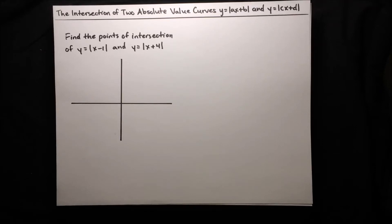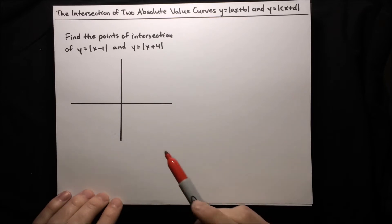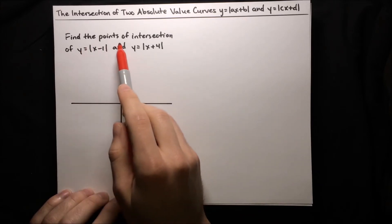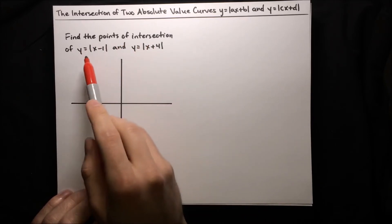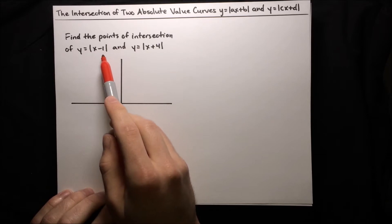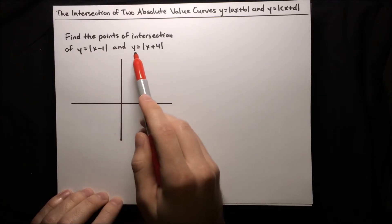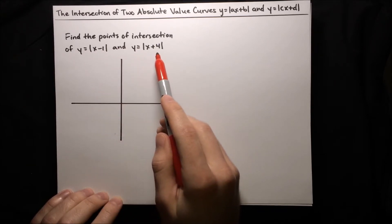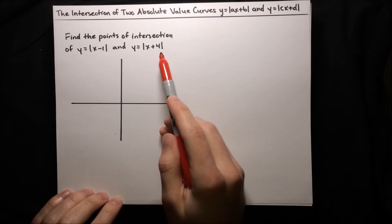In this video, I'm going to show you how to find the intersection of two absolute value curves. In particular, in this first example, we want to find the points of intersection of y equals absolute value of x minus 1 and y equals absolute value of x plus 4.